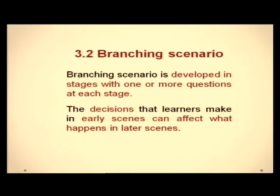A branching scenario is developed in stages with one or more questions at each stage. When the learner finishes one stage and answers a question, in the next stage the learner can change their decision, because what was decided in an earlier stage can affect what happens in the next one. The learner does not know what will happen in the next scene. There are multiple stages — first, second, third — and at each stage the learner can modify their answer and proceed.